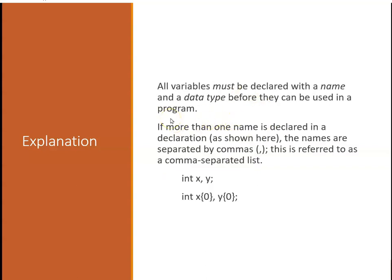Every variable must be declared with a name and a data type. C++ is a strongly typed language, which means it requires that it knows the type of every variable. If you don't declare it before you use it, you will get an error. If more than one name is declared in a declaration, the names can be separated by commas - this is referred to as a comma-separated list. You can say int x, int y, and so forth.